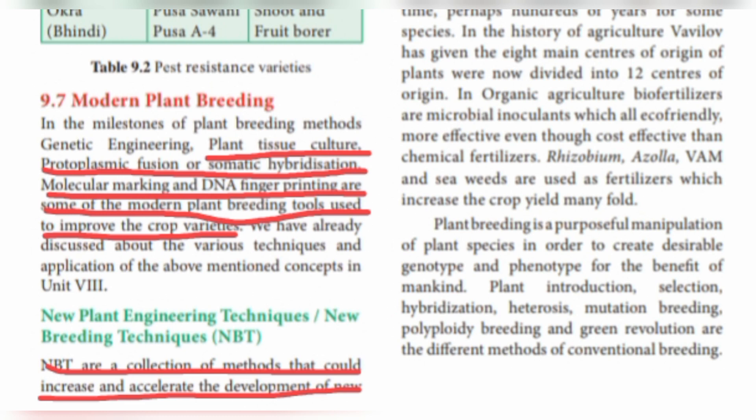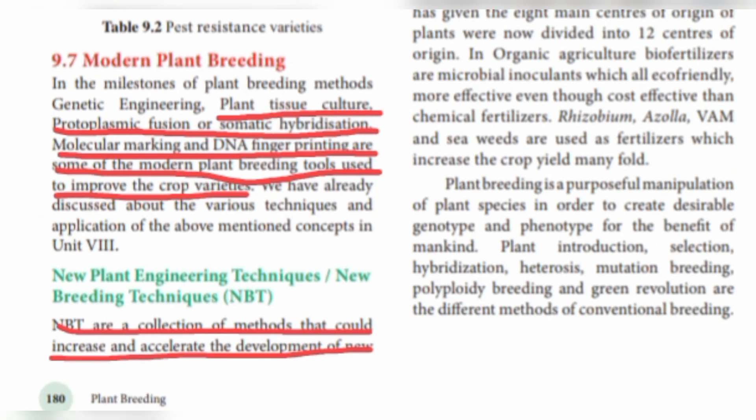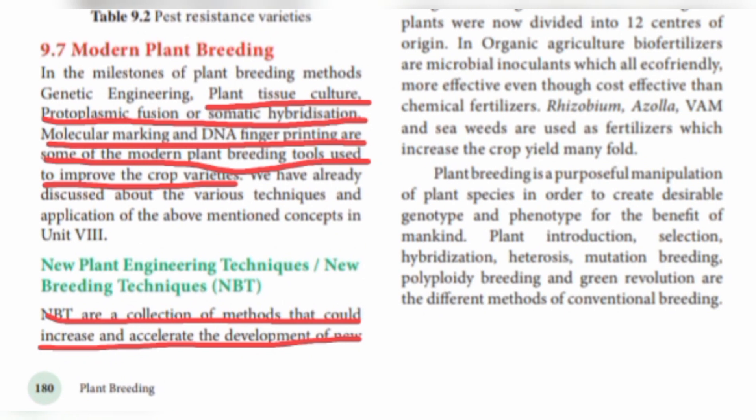Modern plant breeding is now a category of modern biotechnology. Topics include genetic engineering and equipment use. We are going to implement new breeding techniques and new plant engineering techniques. Biomedical engineers and biotechnologists are all involved in modern plant breeding, and there is a lot of scope in this field.